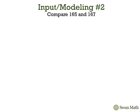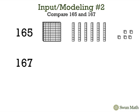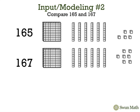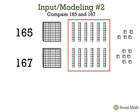Now we're going to compare 165 and 167. We'll use the base 10 blocks to show 165 and 167. To compare, we'll begin by looking at the hundreds place. These are equal, so we'll move over and look at the tens place. These are also equal, both have 6 tens.